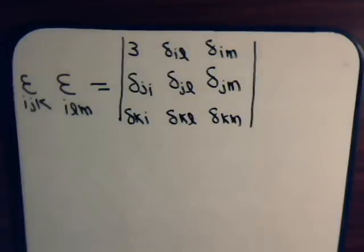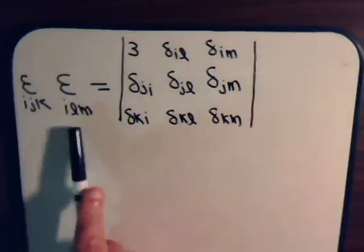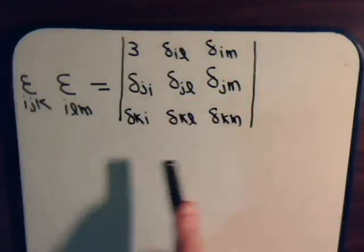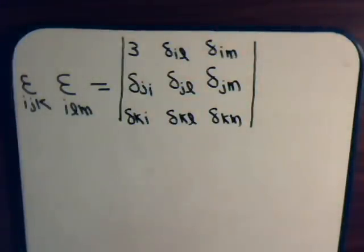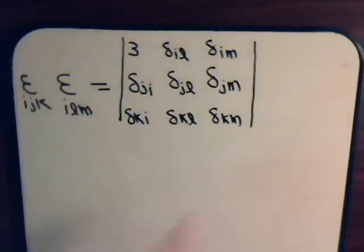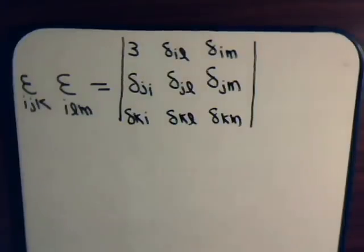In the last video — I think it was video number 8 — we determined that multiplying these two permutation symbols together, their product is equal to the value of this determinant. So we're going to spend a few moments and expand this determinant out in minors and see what kind of expression it gives us.